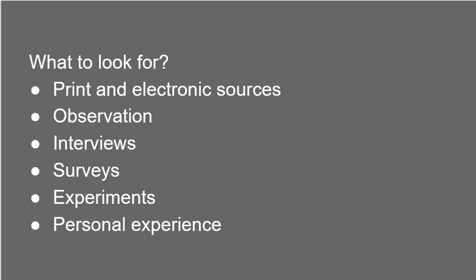So what kind of things do we want to look for? If we make a claim, what kind of evidence do we want to back up what we are saying? We want to look for electronic and print sources like from the internet and from the library. We also have primary sources such as observations, interviews, surveys, experiments, and different types of personal experience.